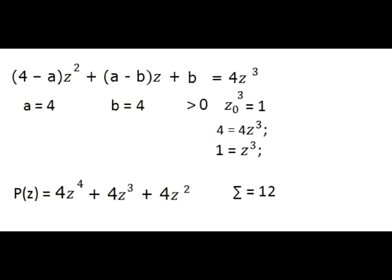The next case is when coefficient c equals 0 and coefficient b is positive. That implies that the roots of this equation with magnitude 1 must be the roots of unity of third order, and the unity of third order doesn't share any common roots with unity of lower orders. That forces coefficients (4-a) and (a-b) to be 0, and it produces one original polynomial with coefficients a and b both equal to 4.